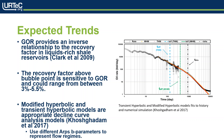I'll talk about the expected trends from simulations and empirical models used to forecast well performance. GOR provides an inverse relationship to recovery factor in liquid-rich shale reservoirs, and recovery factor above bubble point is sensitive to GOR, ranging between three to five and a half percent. Modified hyperbolic and transient hyperbolic models are appropriate decline curve analysis models according to Koshkadam, using different ARPS parameters to represent different flow regimes — as shown in the chart where both models are superimposed on historical data, proving you can predict GOR trends using these empirical models.